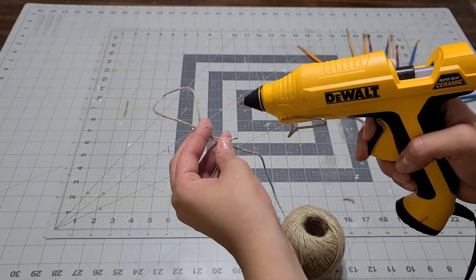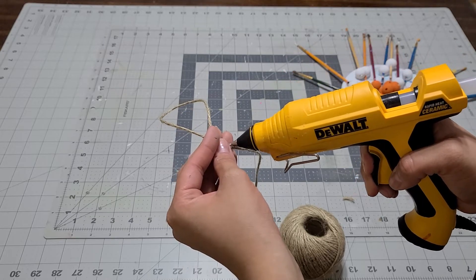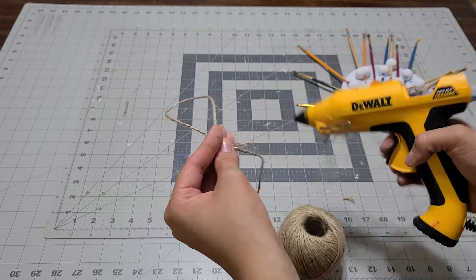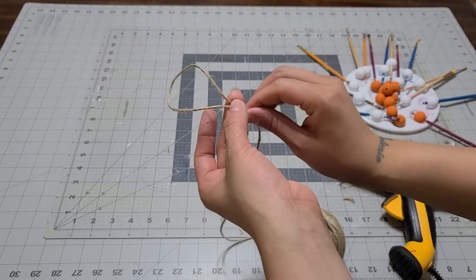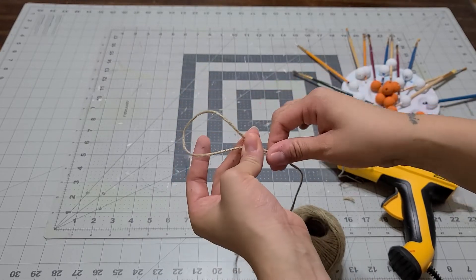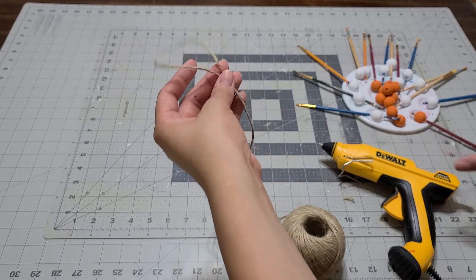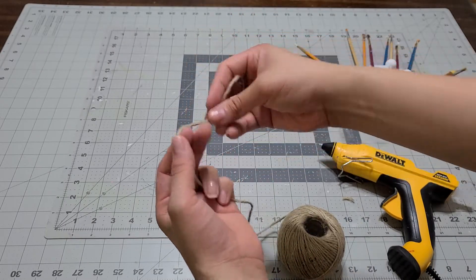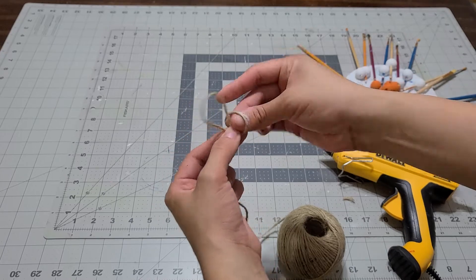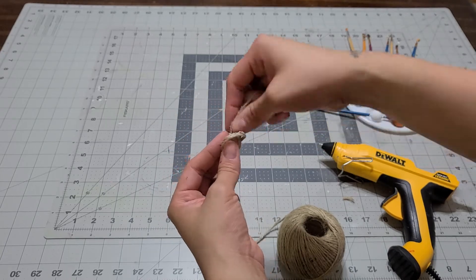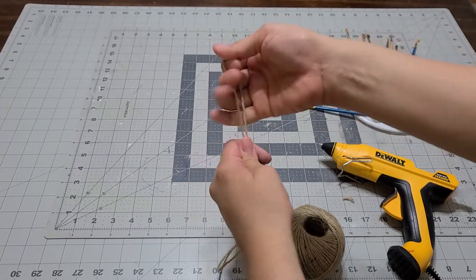I'm going to use the hot glue. This will be great for a fall garland—you can use it for Halloween, fall, any of those occasions.